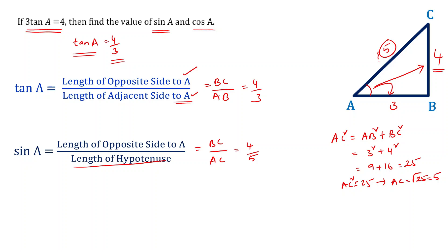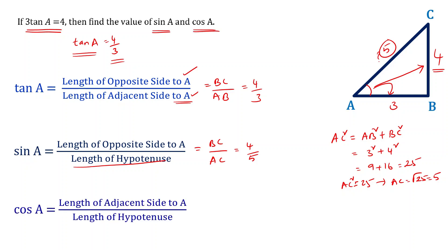Now sin A equals the length of the opposite side to angle A, which is BC, divided by the hypotenuse AC. That is 4 by 5, since BC is 4 and AC is 5. Cos A is defined as the length of the adjacent side to angle A divided by the hypotenuse, which gives AB by AC, that is 3 by 5. So if tan A equals 4 by 3, then sin A is 4 by 5 and cos A is 3 by 5.